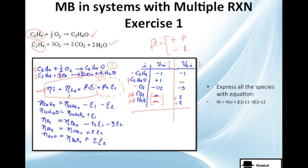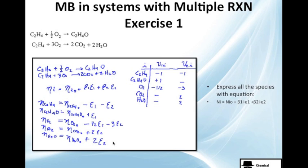Now let's actually substitute all this data into the equation. We have C2H4, C2H4O, oxygen, CO2, and water — we need the initial amounts of each one of these. The stoichiometric coefficients are: minus 1 and minus 1 for C2H4 in reactions 1 and 2; plus 1 and nothing for C2H4O; minus 1/2 and minus 3 for O2; nothing and plus 2 for CO2; and nothing and plus 2 for water. Actually, they just want us to express the molar equation for each species — so this is the answer. Easy.